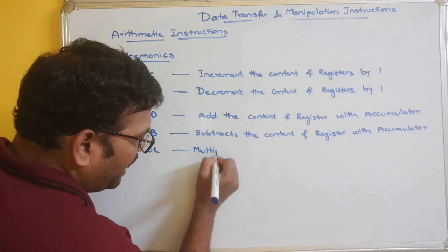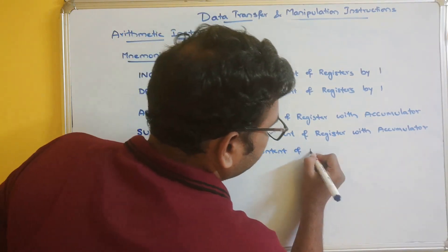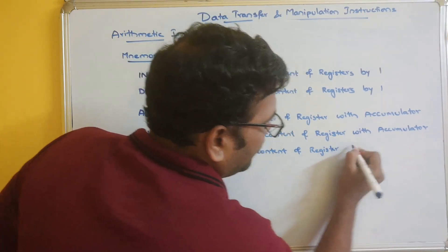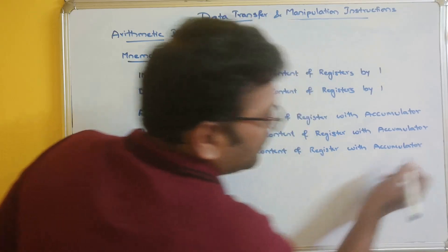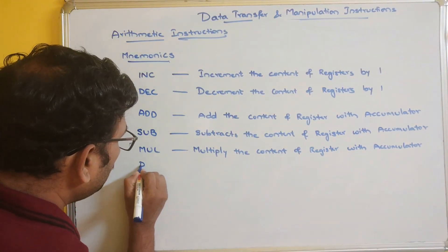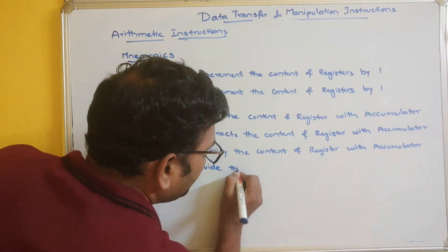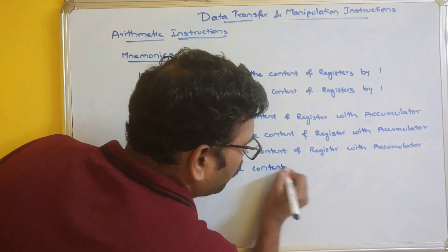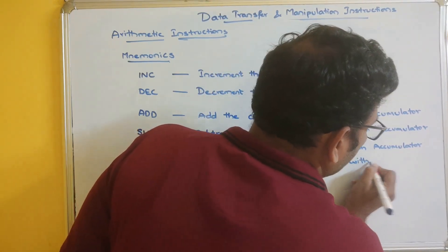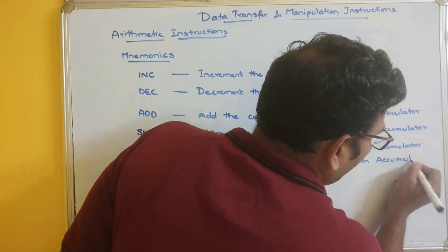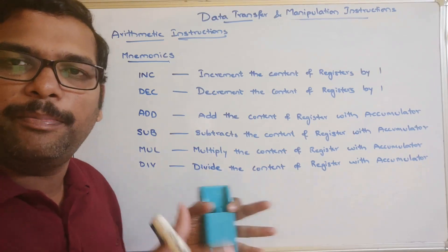Multiplication multiplies the content of a register with the accumulator. These are all the arithmetic operations - we all know about addition, subtraction, multiplication, and division. If there is only one operand, obviously the second operand will be the accumulator. If you give two operands, the operation will be performed on both operands by the accumulator.